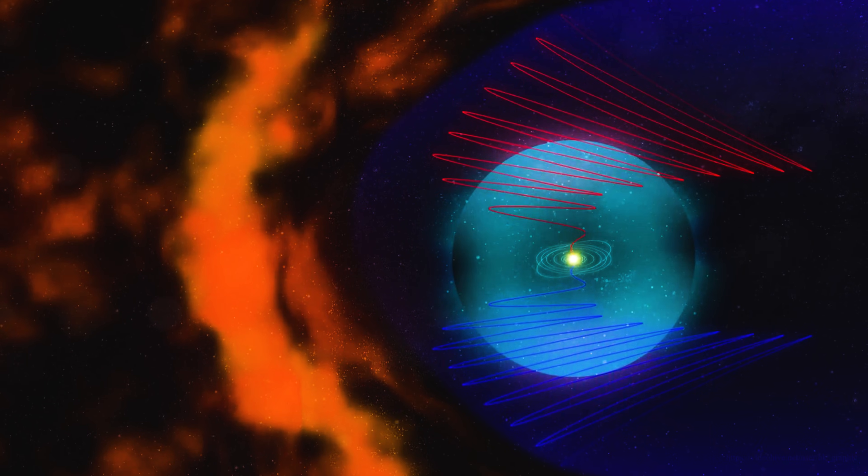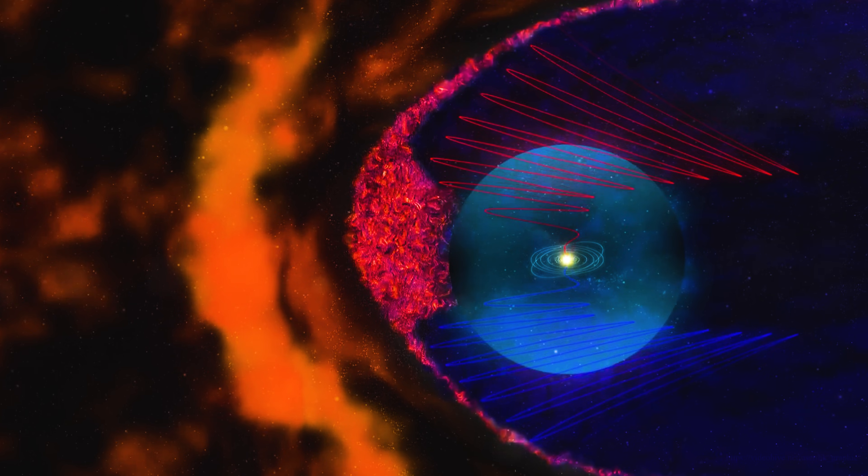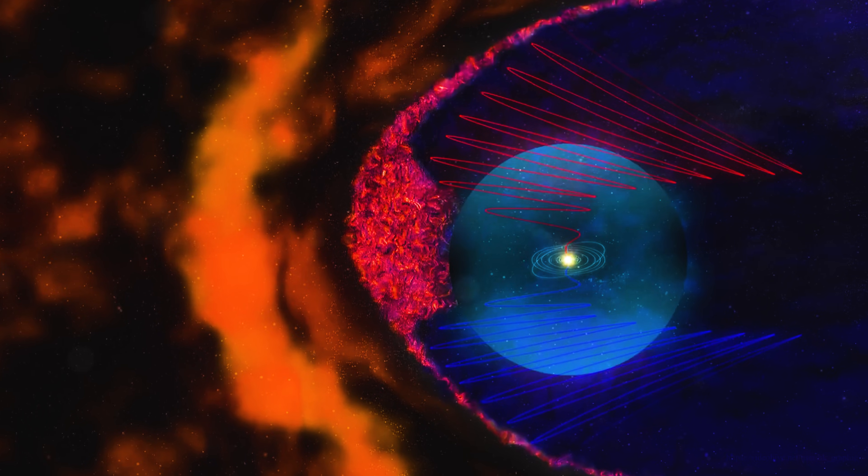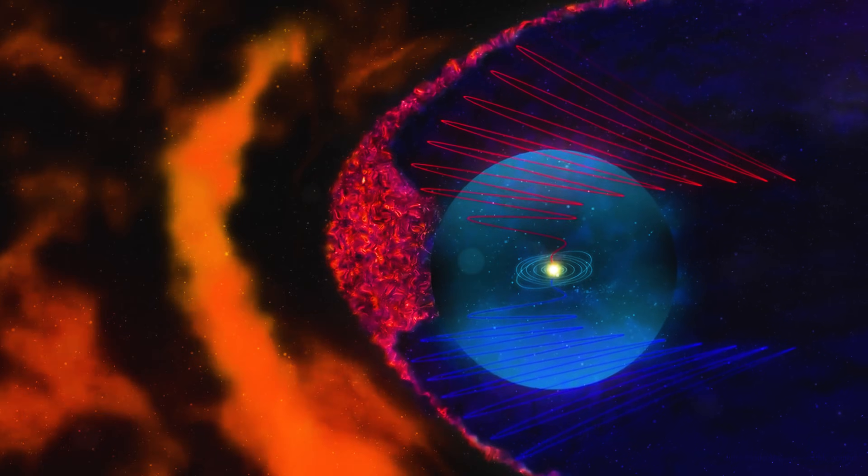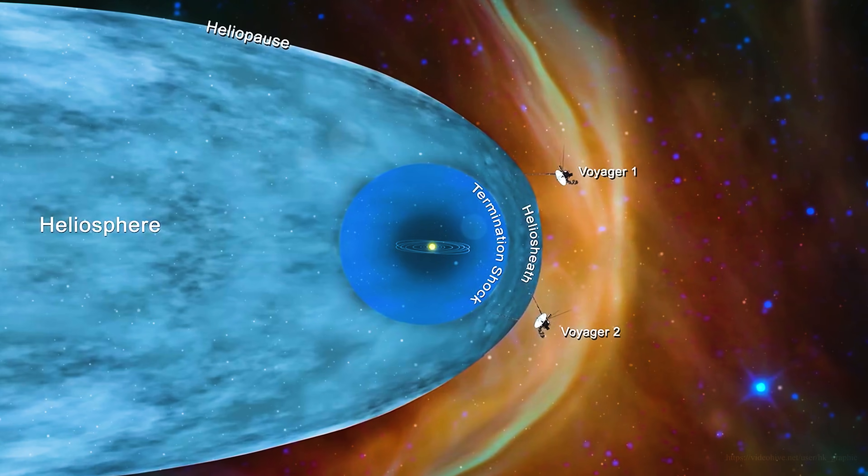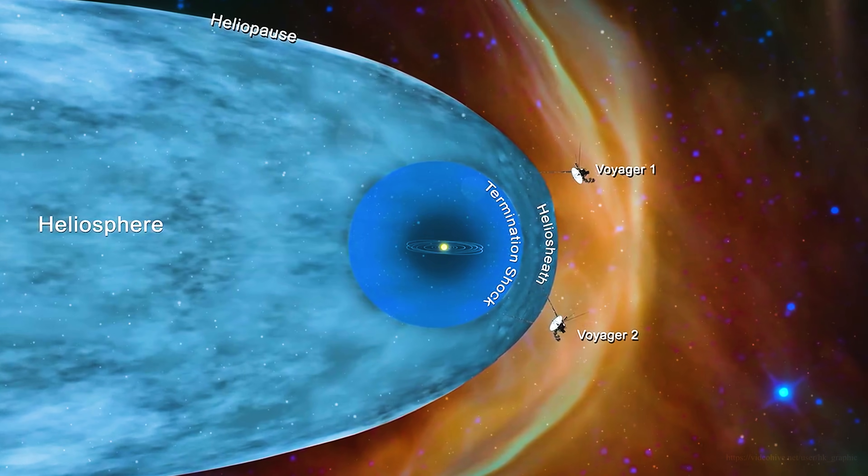Voyager 1 sees the interstellar magnetic field, stretched like a taut rope, stable and consistent. Voyager 2 detects ripples and turbulence, suggesting pockets of compressed plasma and shifting pressure. From just these two distant points, scientists are mapping the shape of the galaxy's magnetic influence, and how it presses against the sun's outer shell.